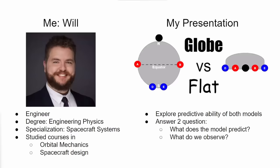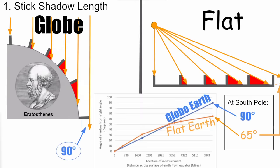My name is William Harris. I'm an engineer — my degree was in engineering physics, my specialization was in spacecraft systems. I've had many courses in orbital mechanics and spacecraft design. Today I want to explore this comparison of the predictive power between the globe model and the flat Earth model: what do they predict, and what do we observe in reality?